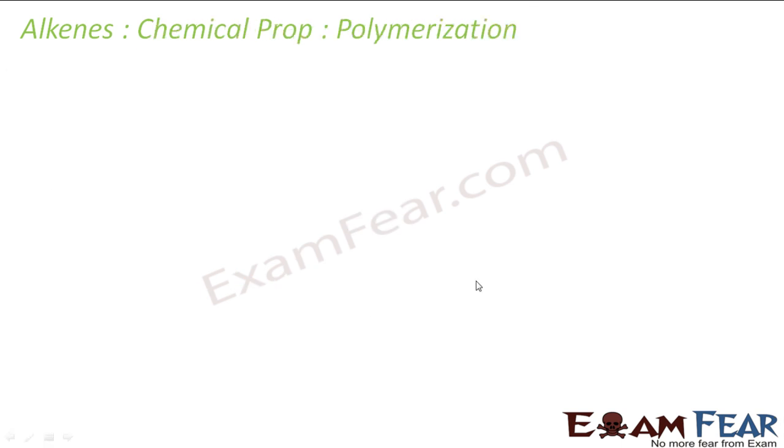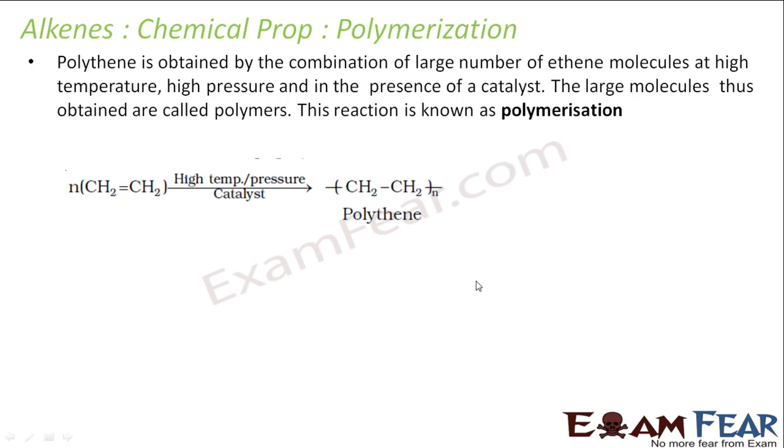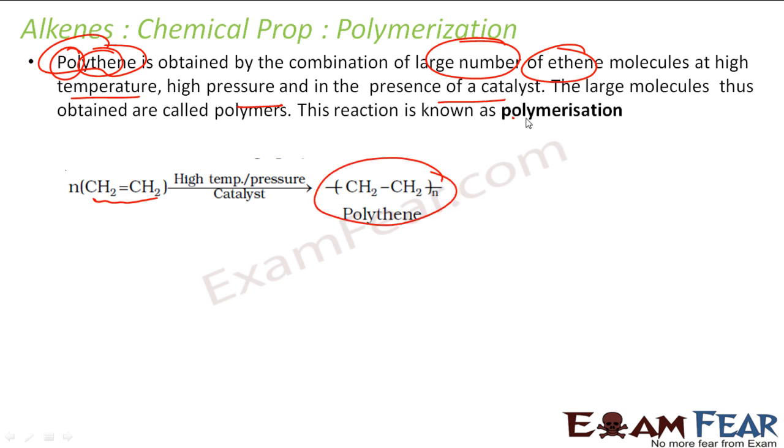Let us discuss polymerization. Polythene, which we use in our daily life to carry stuff, is obtained from the combination of large number of ethene molecules. That's why it is called polyethene - a lot of ethene molecules. To do this, we have to go to high temperature and high pressure in the presence of a catalyst. This whole process of combining lot of ethene molecules, N number of ethene molecules at high temperature and pressure in the presence of a catalyst, we get polyethene. This is called polymerization.